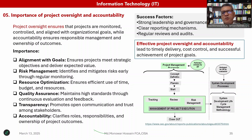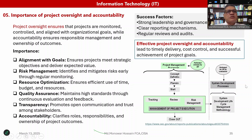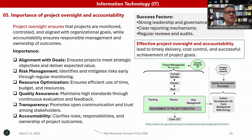We know the success factors of effective project oversight and accountability: strong leadership and governance, clear reporting and mechanisms, and regular review and audit. Effective project oversight and accountability lead to timely delivery, cost control, and achievement of project goals. With this, we close out our information system or system output here.